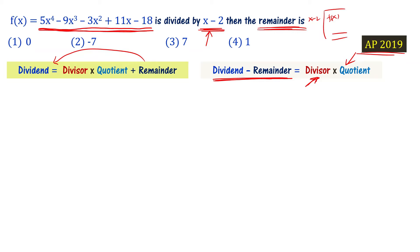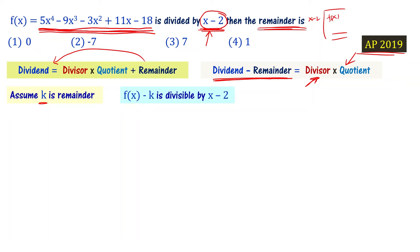Now let's say the remainder is k. If the remainder is k, suppose k is a constant, then f of x minus k is divisible by x minus 2.